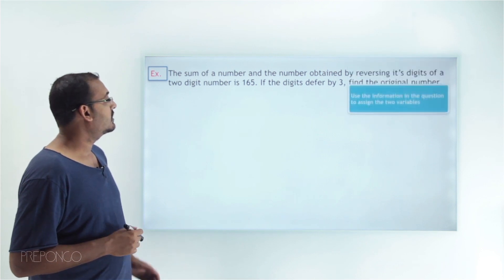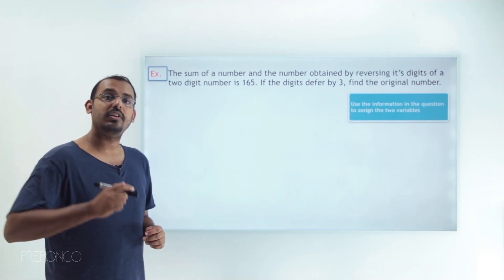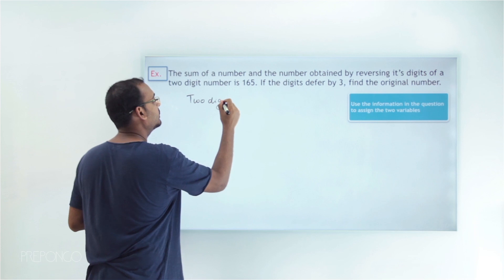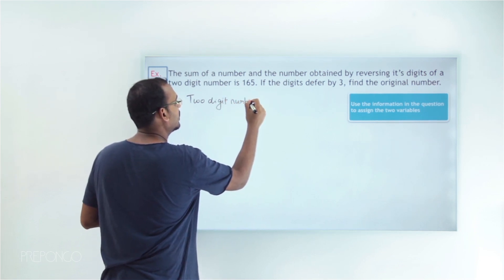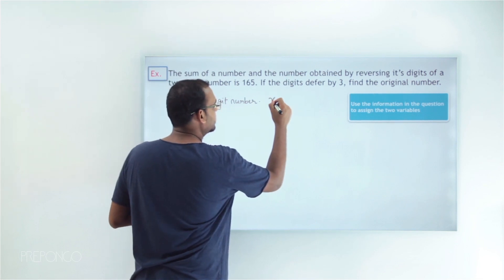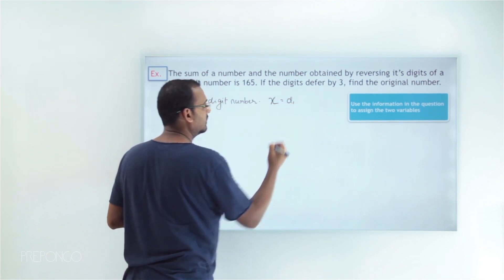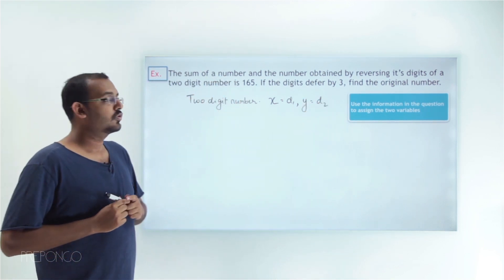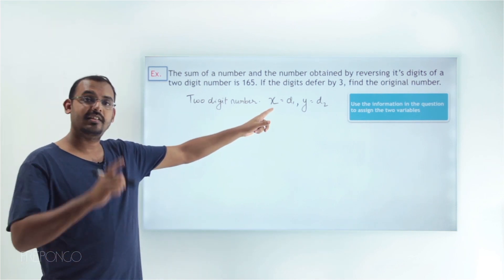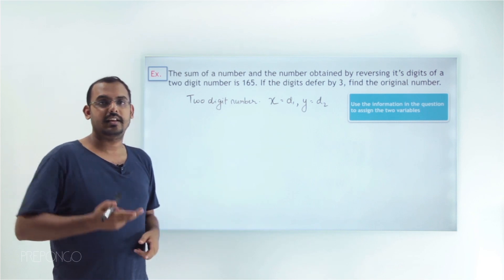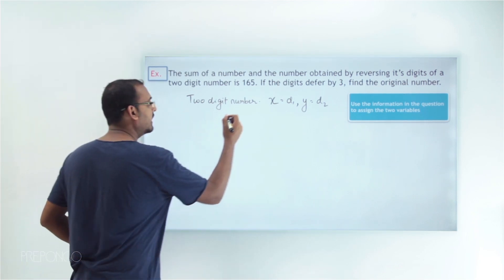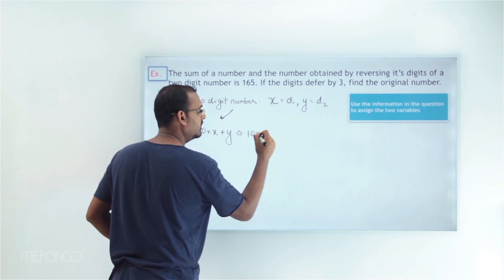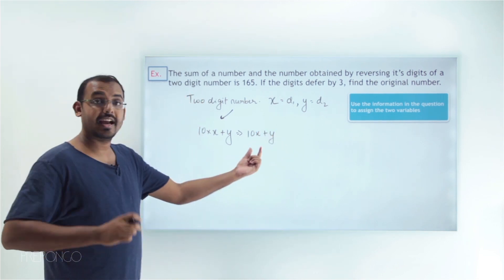The first thing to do is assign variables to the unknowns. We know that this is a two digit number, so let's assign the variable x to the first digit and the variable y to the second digit. For a two digit number, we can write the number as 10x plus y. This will be the actual number.